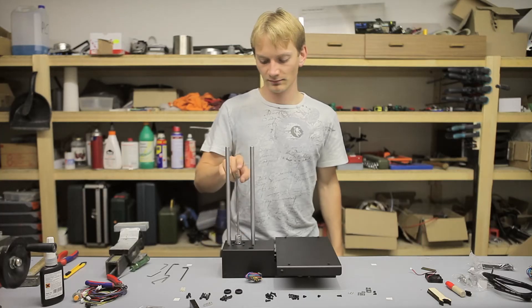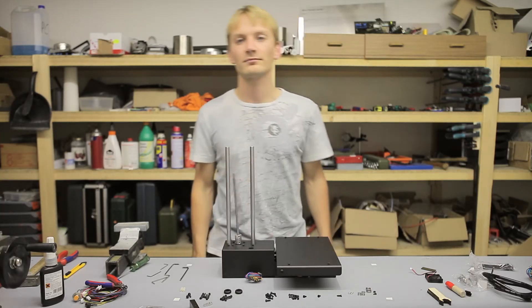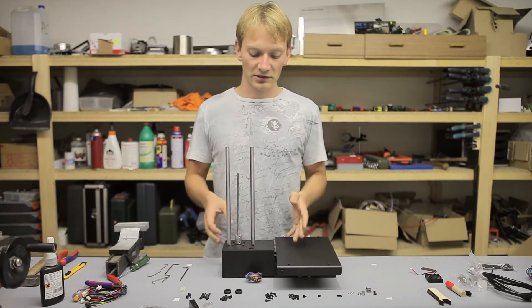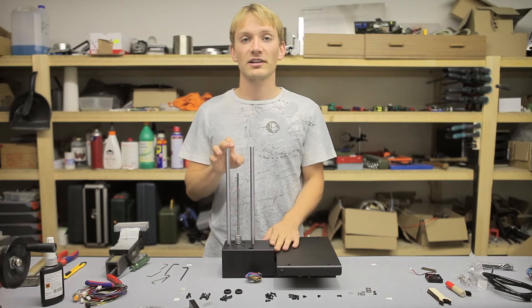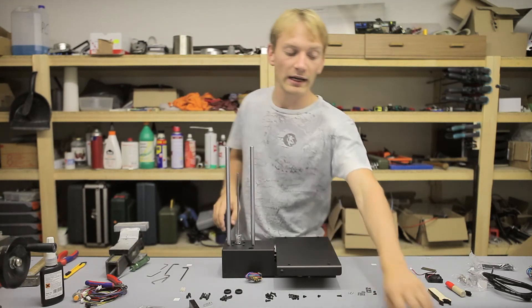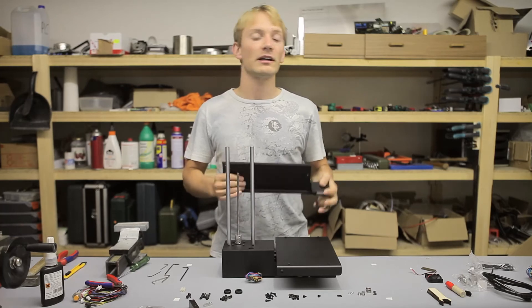And that's about the right amount of tension. Okay, so that was the assembly of the z-axis and of the electronics. In the next video, we're going to look at installing the y-axis into the printer.